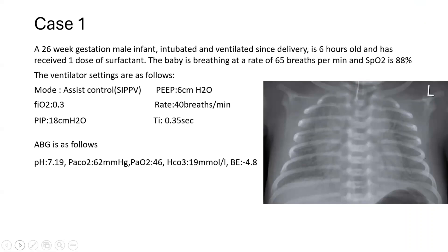The baby has a spontaneous rate of 65. The spontaneous breathing rate has to be looked at — if it is more than 40, increasing the set rate doesn't change anything. So the x-ray is relatively low volume. Remember, the x-ray is a point reflection, so we don't know what time this x-ray was done compared to the current condition of the baby. You go by the parameters of the blood gas and oxygenation more than the x-ray.